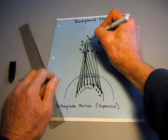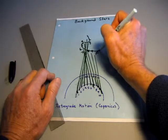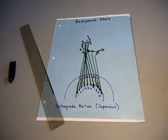So it seems to have gone around this way to four and five, and then back in this direction. And that's the retrograde motion.